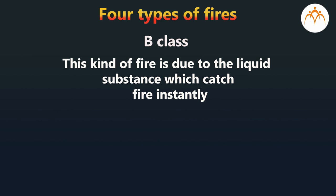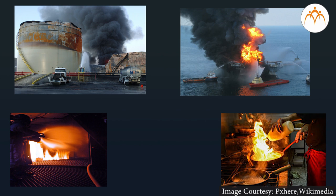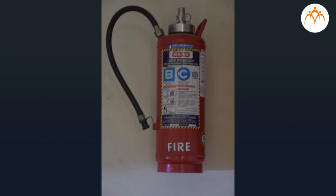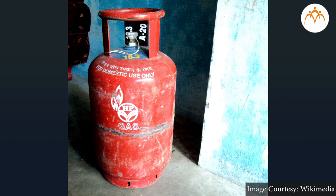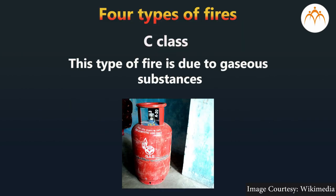Examples of Type B fire include fire caused by petrol, oil, flammable liquid, cooking oil, and dye. Such a fire is extinguished by using a fire extinguisher. Domestic LPG gas is a highly inflammable fuel product, and the fire caused by this is dangerous and can cause disasters. This type is Type C fire, caused by gaseous substances.